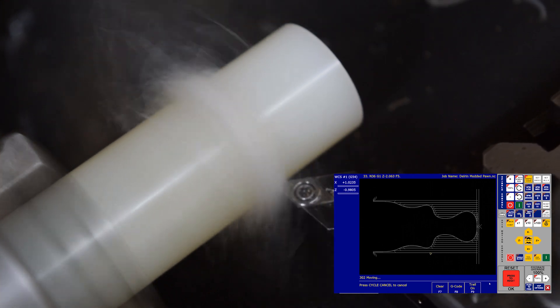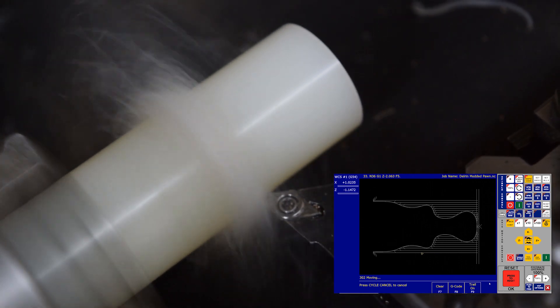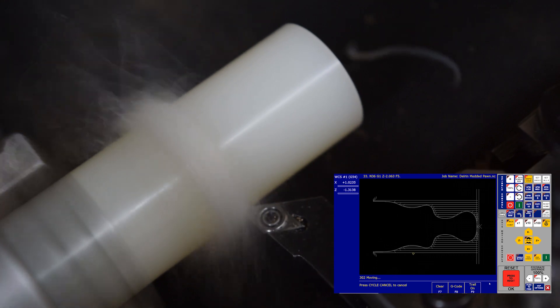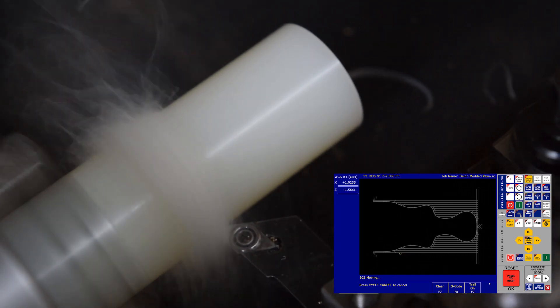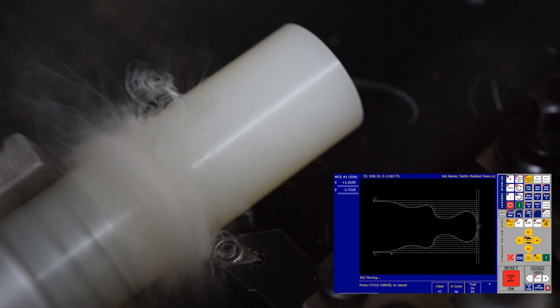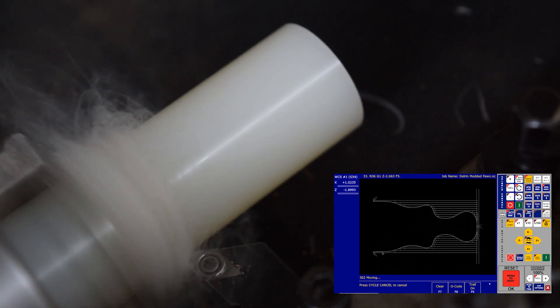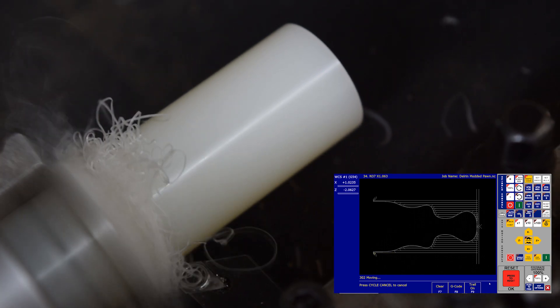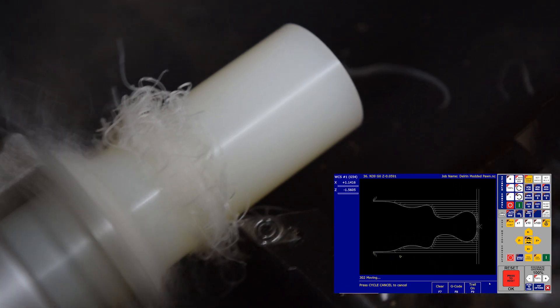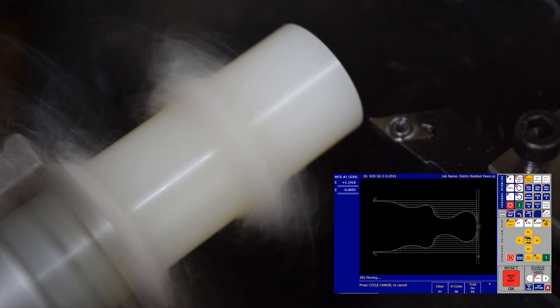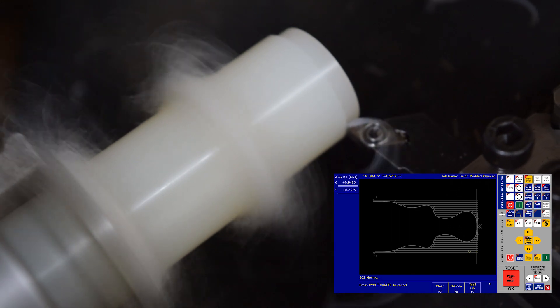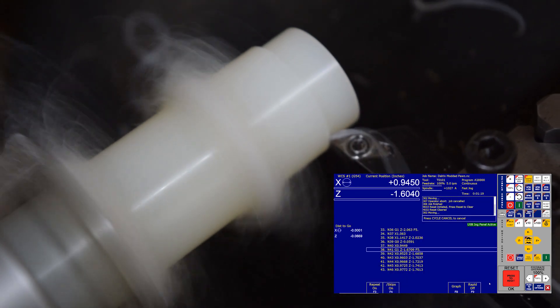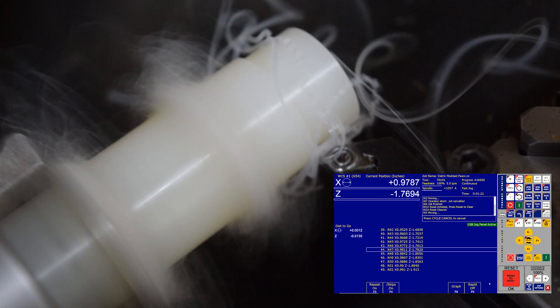Throughout this program, I had to occasionally pull away some of the swarf. A nice feature of the software is you can actually pause a program at any time. This allows you to check the tool, replace the insert tip if it happens to break, and also in this case it allowed me to remove a lot of the entangled Delrin.